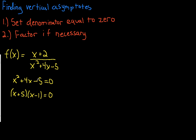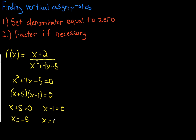We set each separate component equal to zero: x + 5 = 0 gives x = −5, and x − 1 = 0 gives x = +1. Those are the vertical asymptotes.